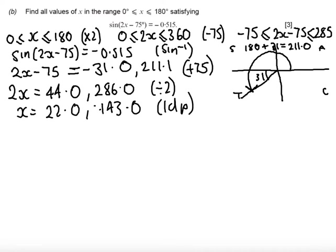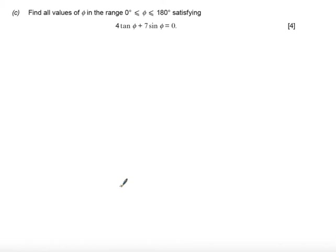Finally, let's have a look at part C. Part C says to find all values of φ in the range 0 ≤ φ ≤ 180 degrees. Here we have an equation 4tanφ + 7sinφ = 0.